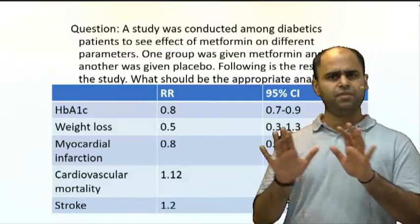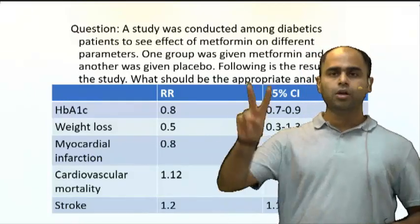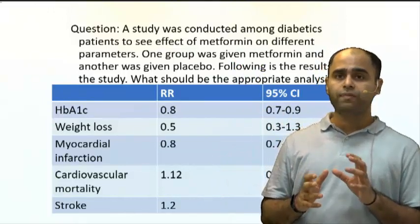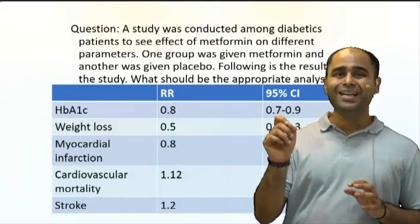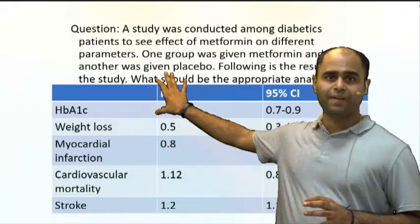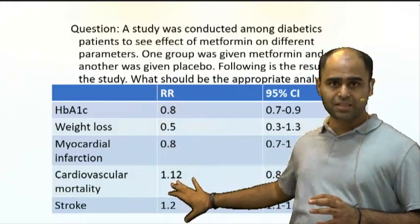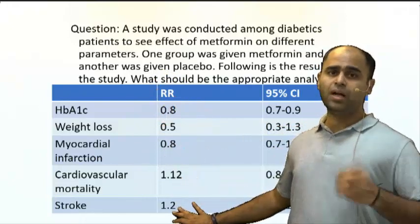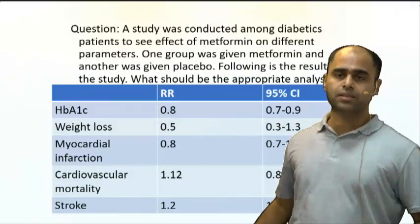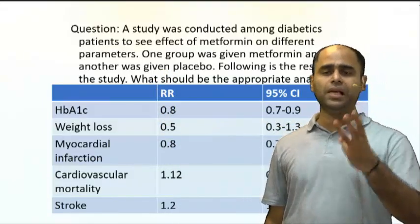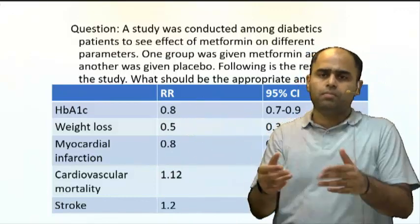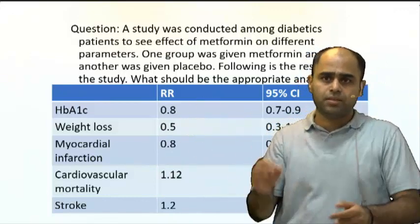Rule number two: the more the distance of the point estimate from the null value, the more is the significance. What is the point estimate? These values shown in the table. Rule three: the smaller the CI, the more the significance.